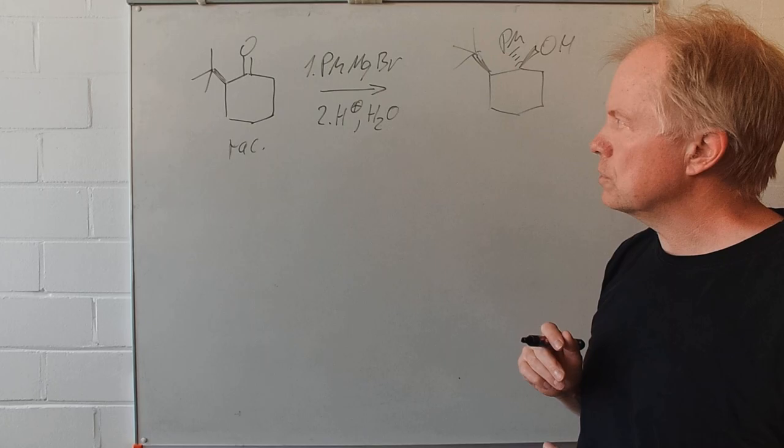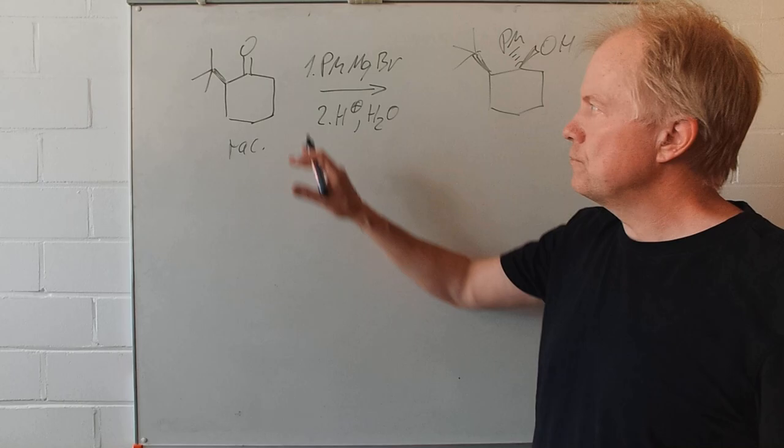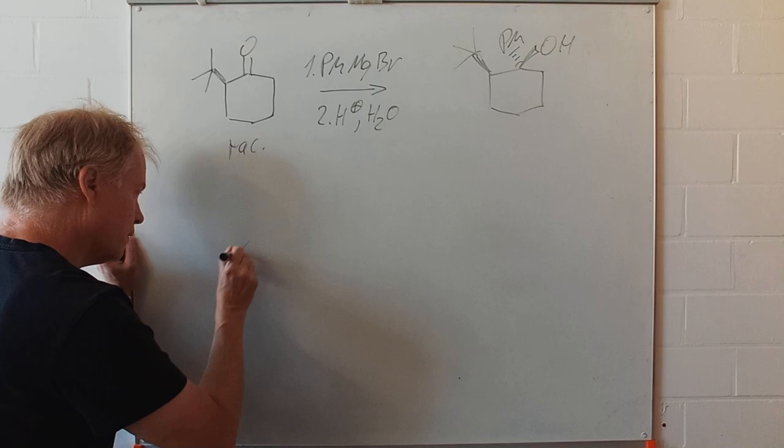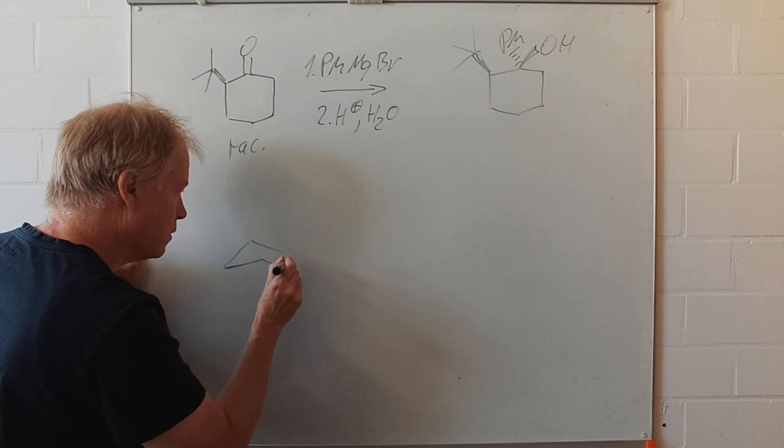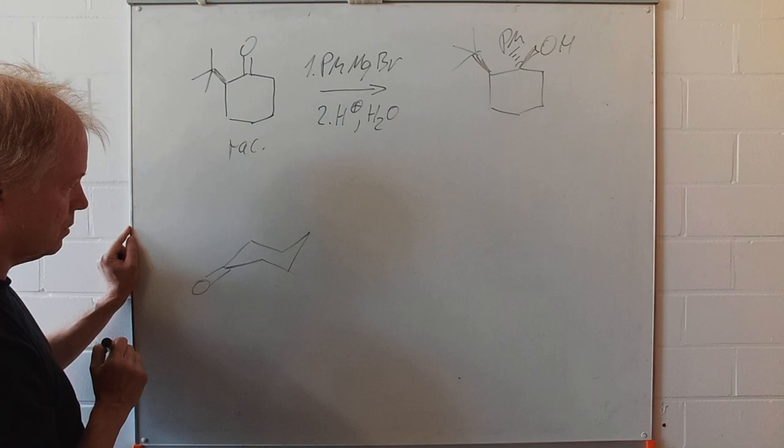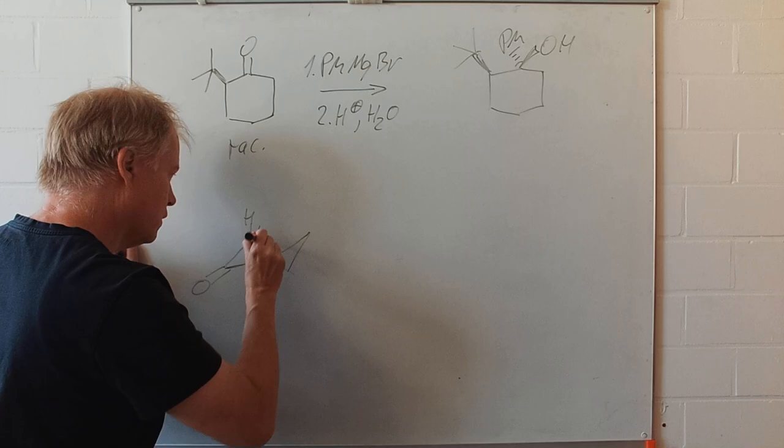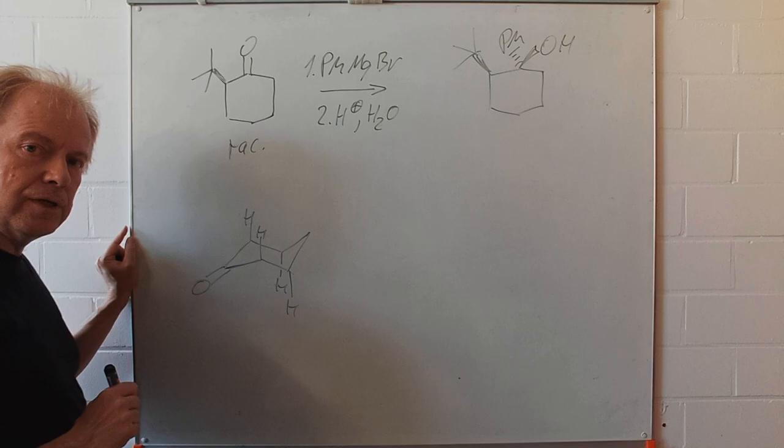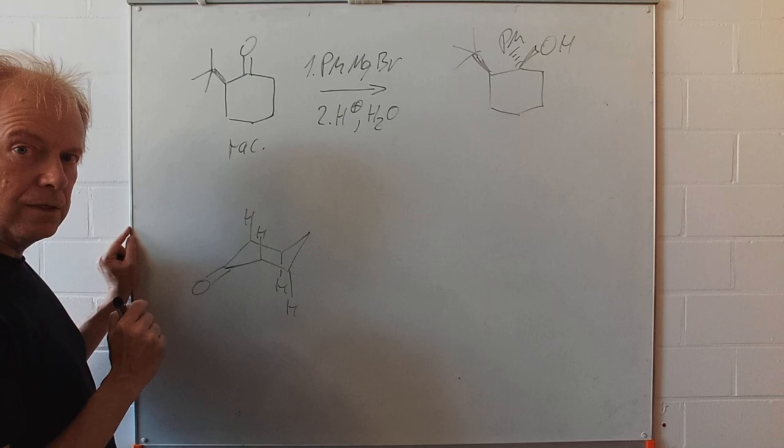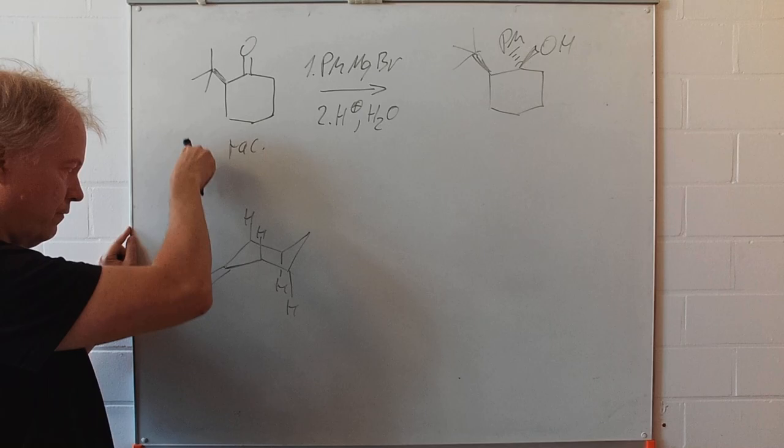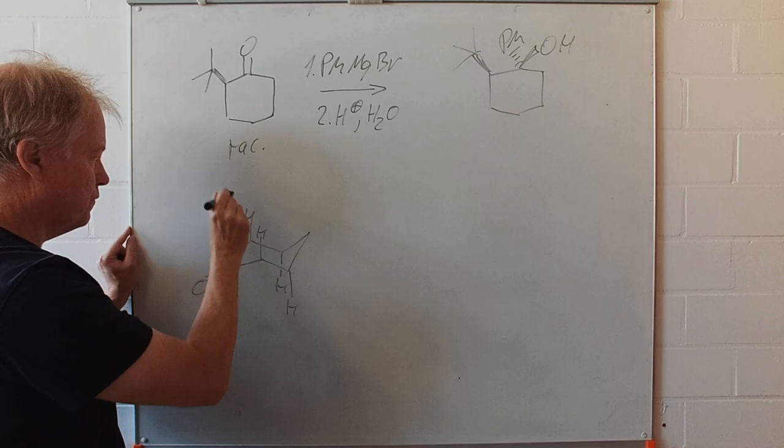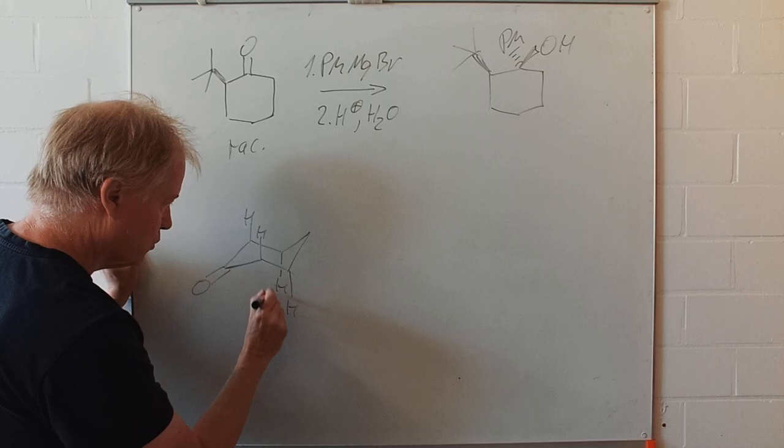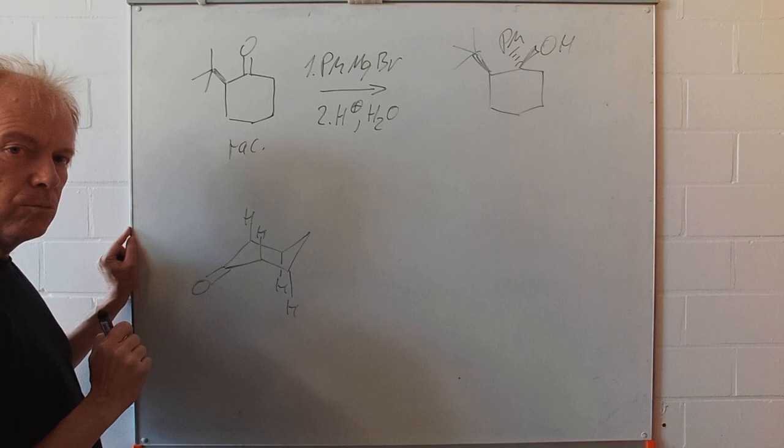We have to draw the chair conformation with the carbonyl group here and let us also draw some of the axial hydrogens. Without an additional substituent the nucleophile will certainly attack from this side here. We have far more room compared to this side of the molecule.